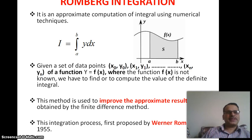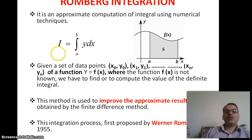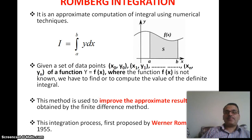As seen in older videos, different numerical integration techniques were covered. When we have data points x0 y0, x1 y1, ... xn yn and we need to find the integral of y dx from a to b, we use finite difference methods like trapezoidal rule, Simpson's one-third rule, Simpson's three-eighth rule, Weddle's rule, and others. Romberg integration is an improvement of the approximate results obtained by these finite difference methods.